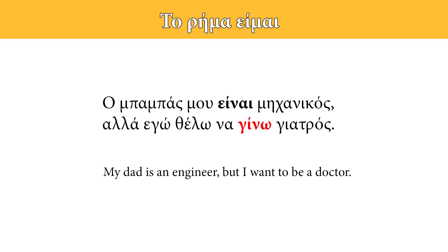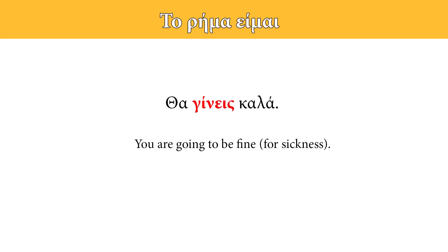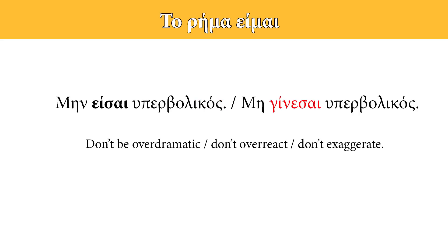An important note here: when we say that we want to be something in Greek, we don't use the verb είμαι, but instead the verb γίνομαι. We also use γίνομαι to express that someone will recover from an illness — for example, θα γίνεις καλά. In some cases, like μην είσαι υπερβολικός and μη γίνεσαι υπερβολικός, we can use both verbs είμαι and γίνομαι.